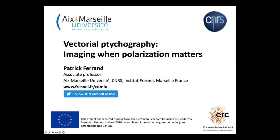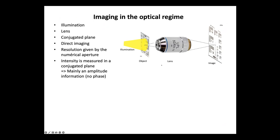Today I will speak about vectorial ptychography. I'm a guy more in the spectrum of the range of optics. For us in optics, when we speak about images, we have a great advantage, which is that we have this microscope objective — a great component. When we are dealing with images, what we do is that we just use this kind of powerful lens to form an image in a plane which is called conjugated.